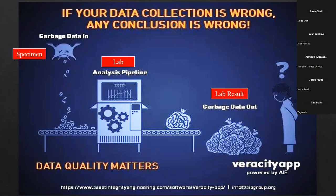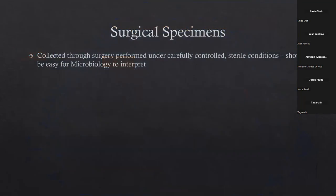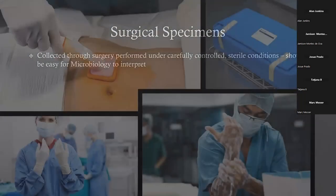I want to talk about surgical specimens in particular today, because when we think of surgery, we think this should be easy. You're going in, you're being very sterile, you're cutting in, you're taking something out that normally has no normal flora whatsoever. It's all very careful, very controlled. It should be very easy for us to interpret — if something's growing, it's important.